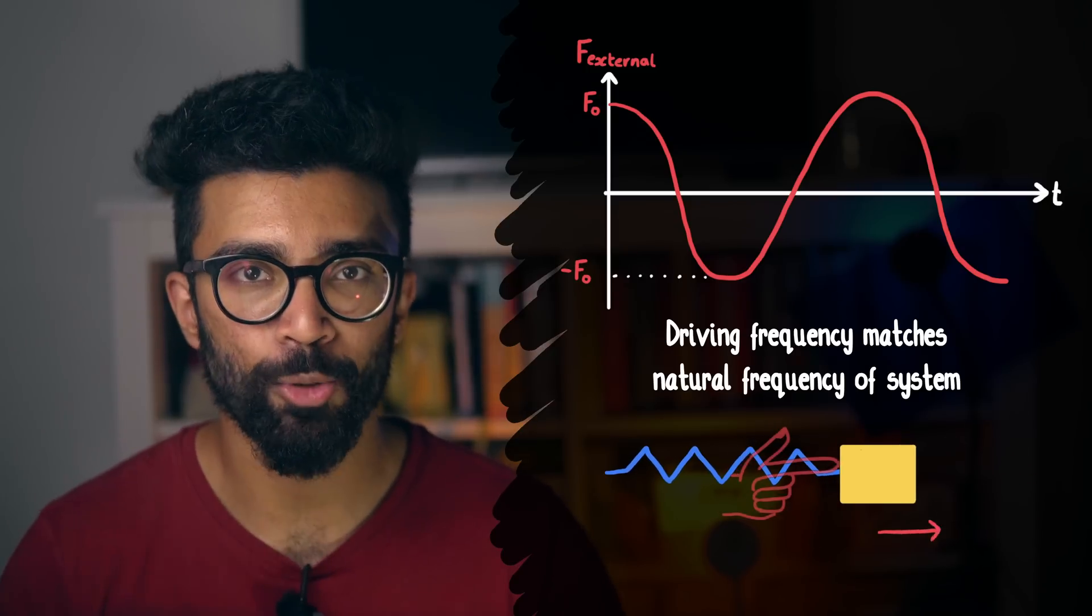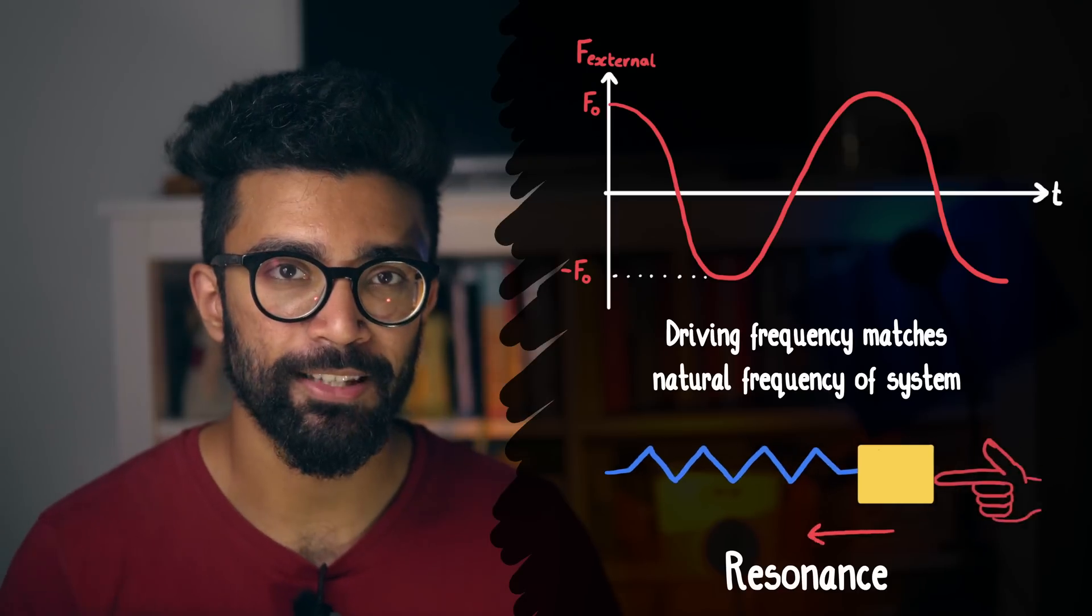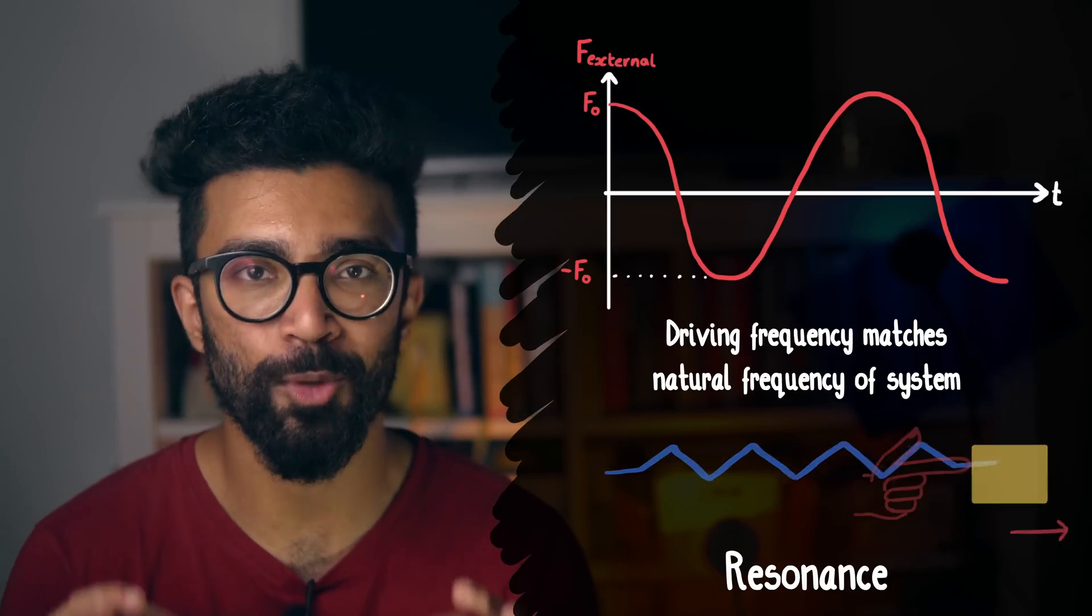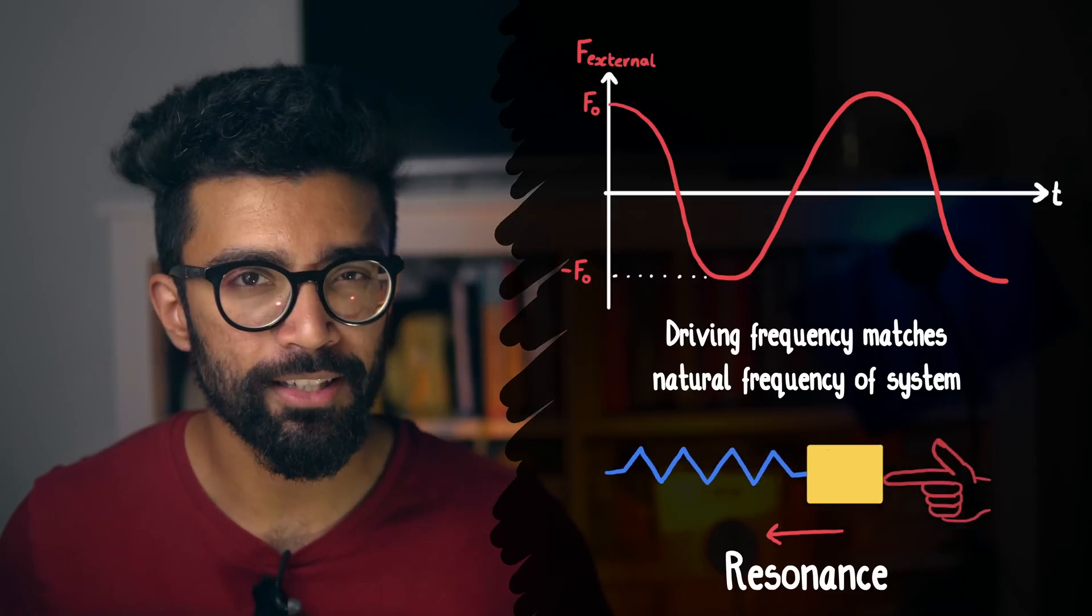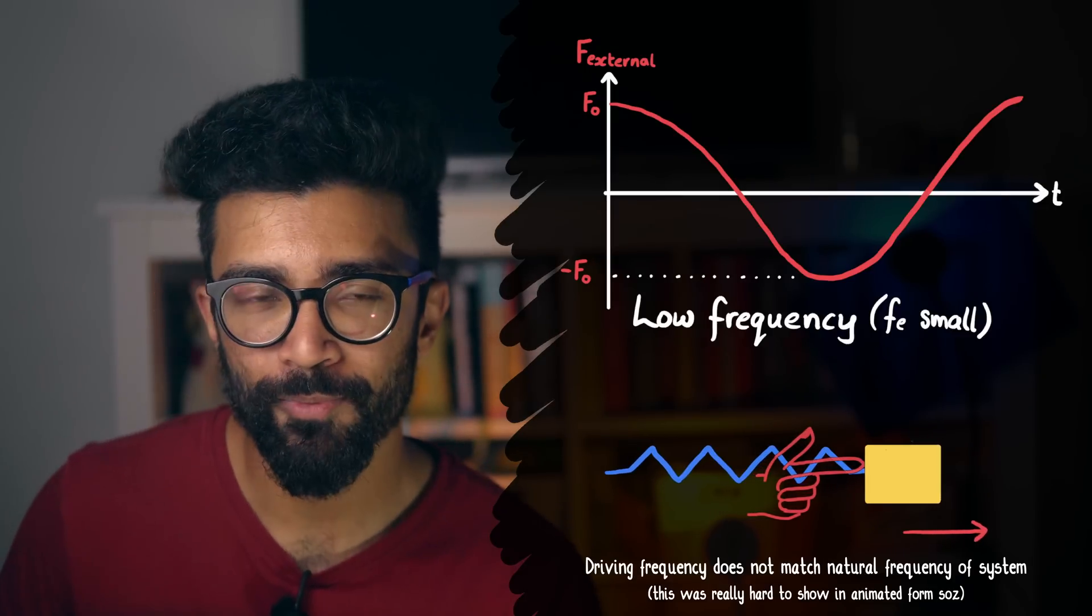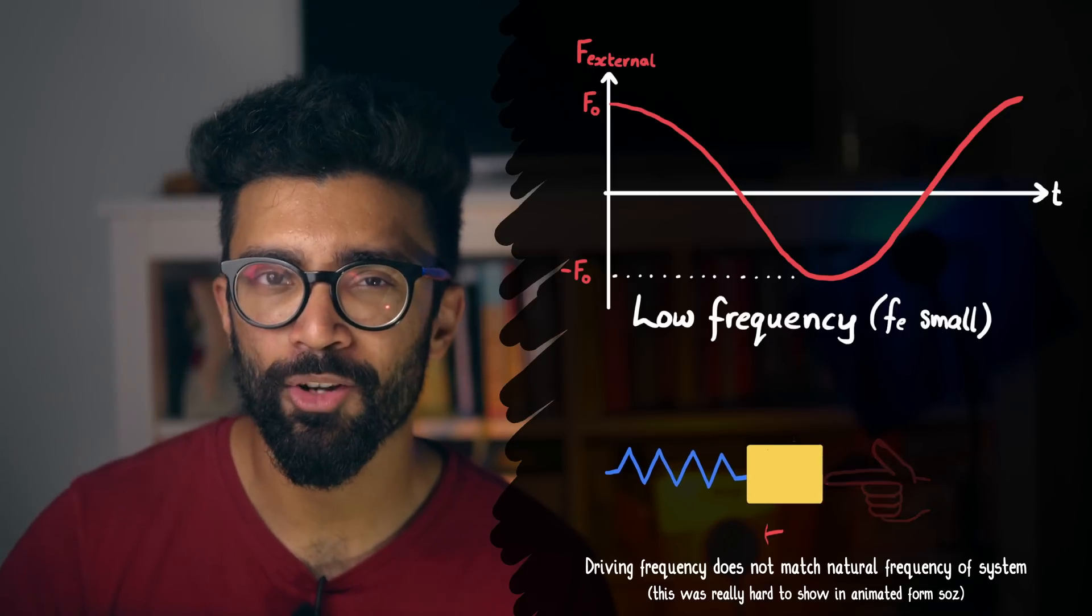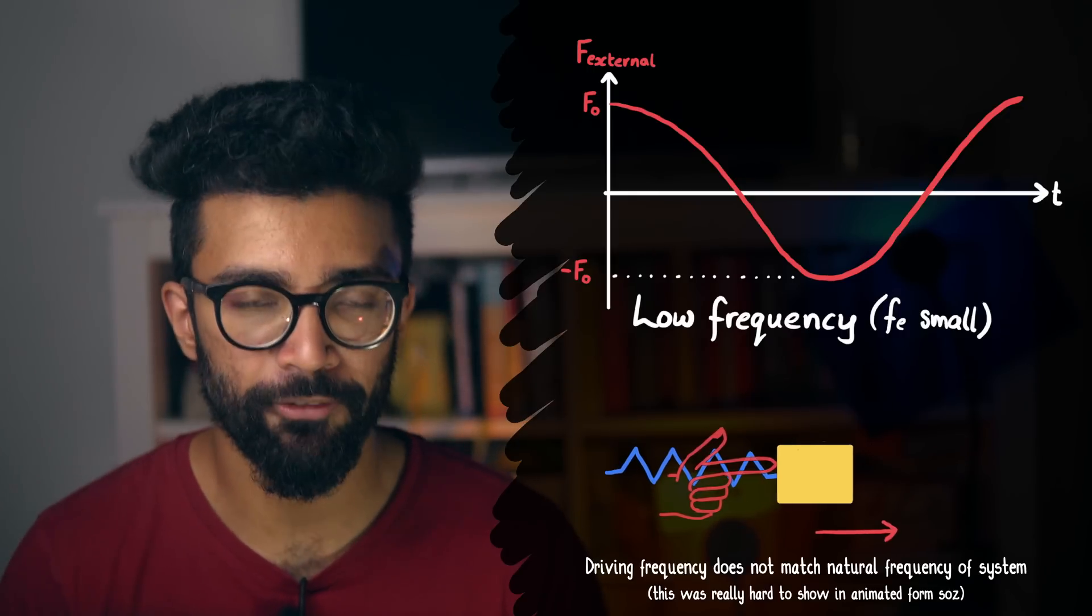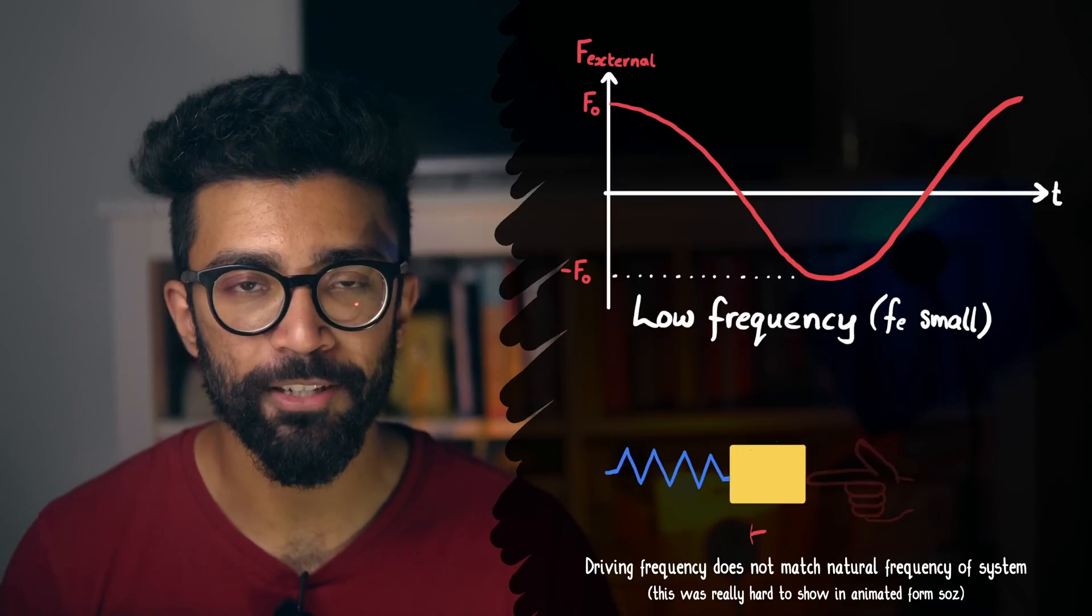Of course, if the driving frequency matches the natural frequency of the system, then we get a thing called resonance, where the oscillation gets bigger and bigger in size because the applied force exactly matches what is needed to make the motion bigger and bigger. Whereas in other cases, at some points, the force we will exert will be against the motion of the system and so won't lead to a compounding effect where the amplitude gets bigger and bigger. More on resonance in a future video.